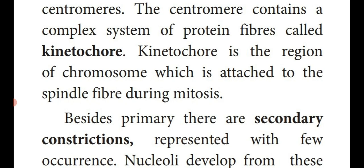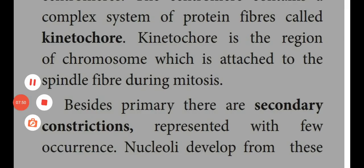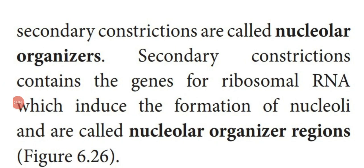The next structure is the secondary constriction, which is present in few areas. The nucleolus present inside the nucleus is produced by the region known as secondary constriction, so the secondary constriction is known as the nucleolar organizer. This secondary constriction contains genes for ribosomal RNA which induce the formation of nucleoli, and that is why they are known as the nucleolar organizer region.